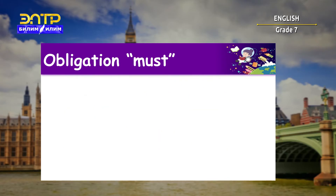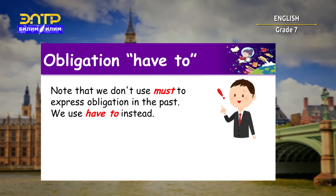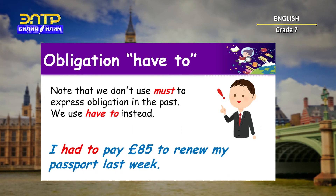'Must' expresses a strong obligation or necessity. It often shows us that the obligation comes from the speaker or the authority that wrote the sentence. For example: I must phone my dad — it's his birthday today. Or, teacher to student: You must hand in your homework on Tuesday, or you will lose 10% of your mark. Or, a sign on a plane: Seat belts must be worn by all passengers. Note that we don't use 'must' to express obligation in the past — we use 'have to' instead. For example: I had to pay 89 pounds to renew my passport last week.